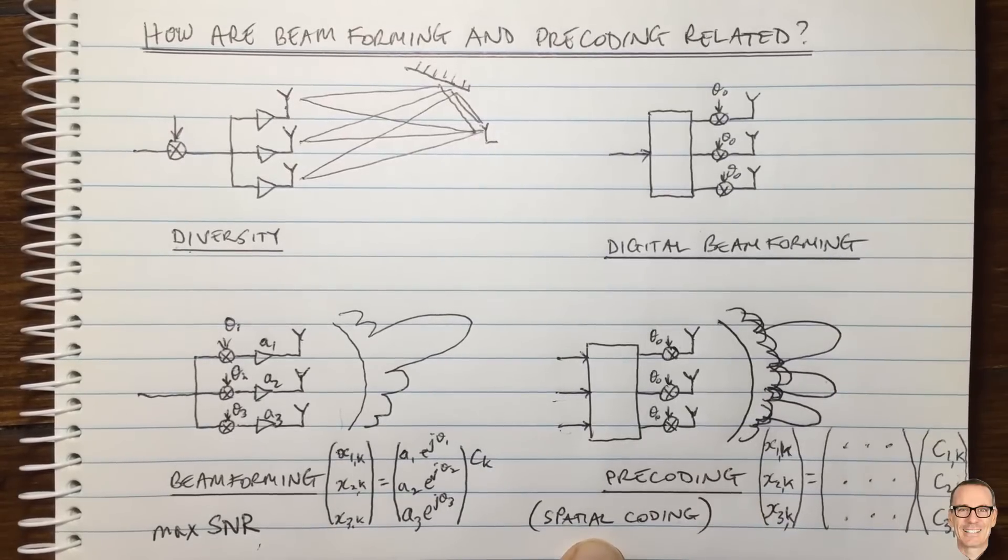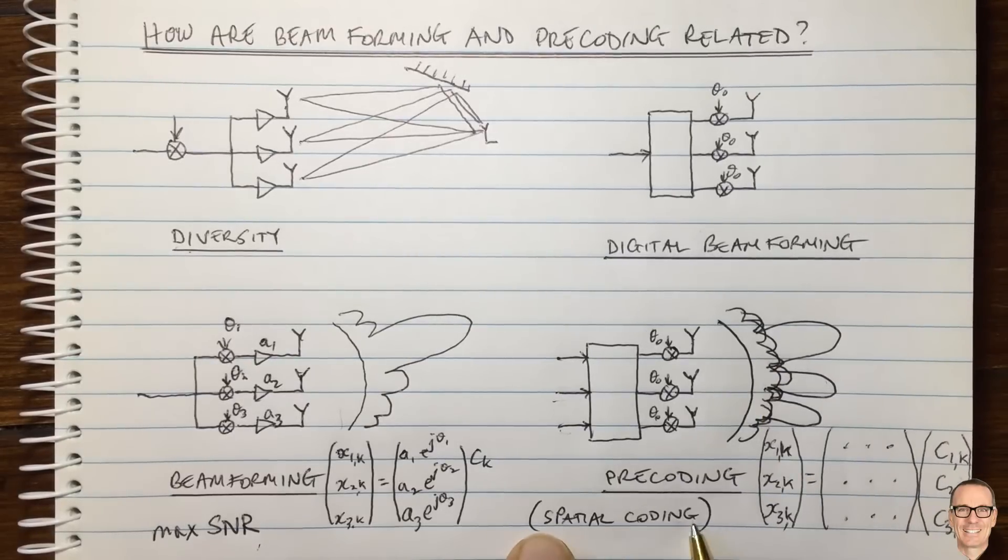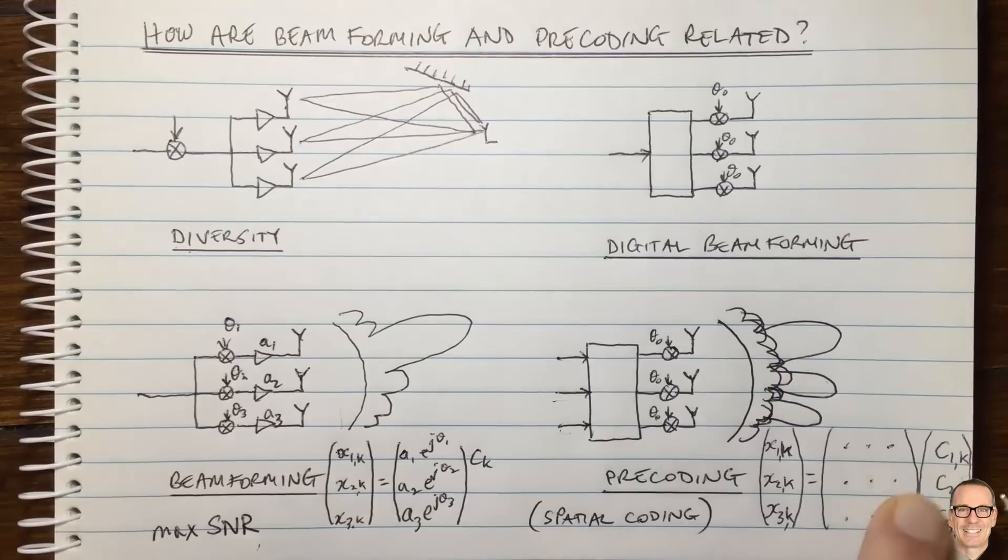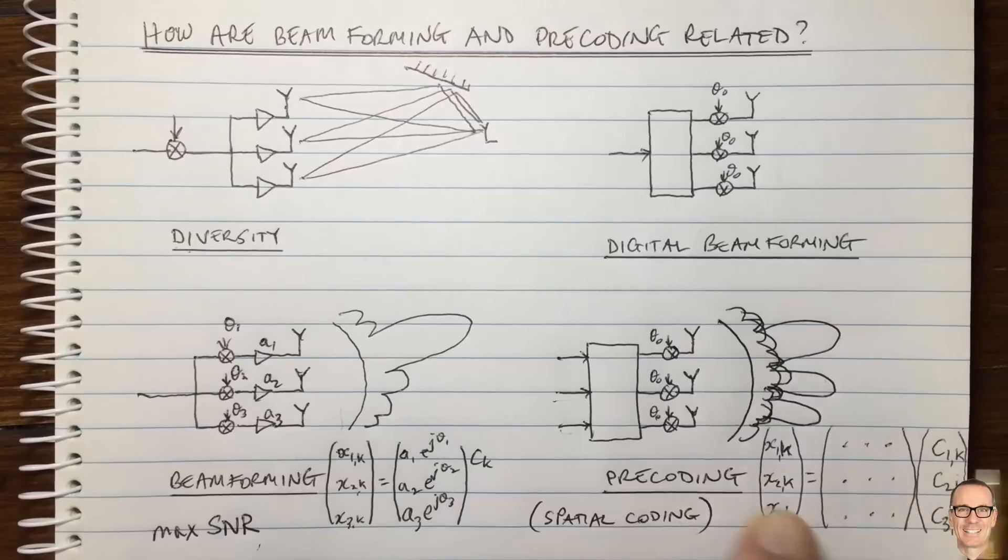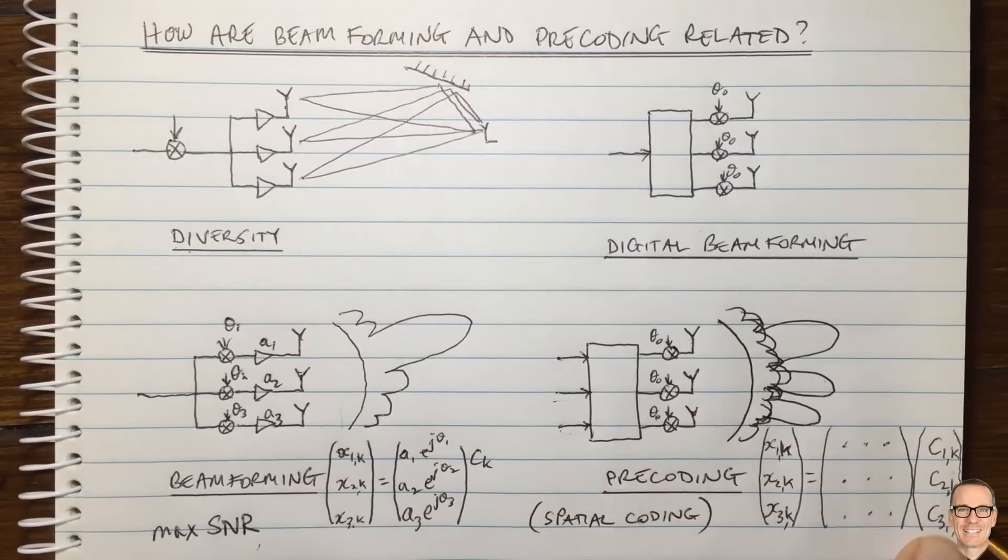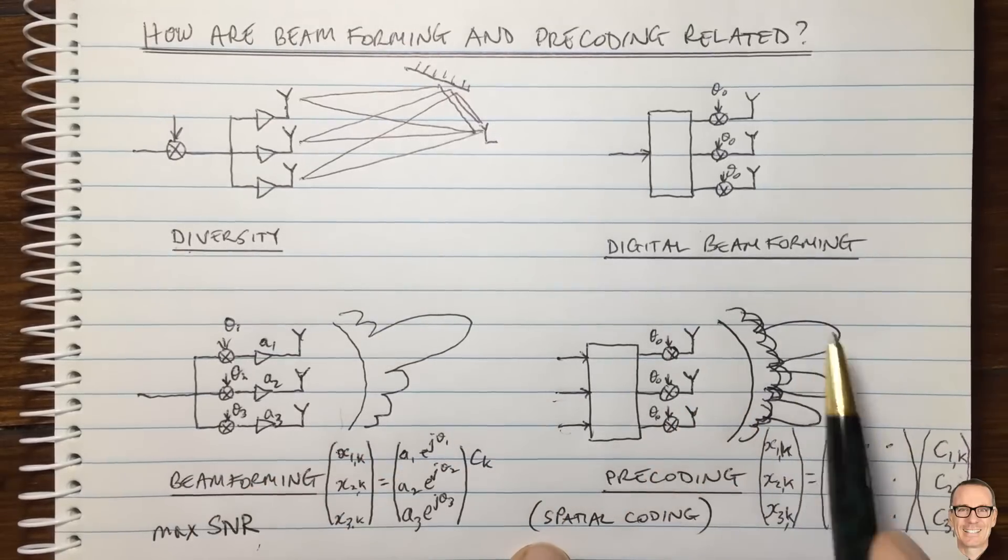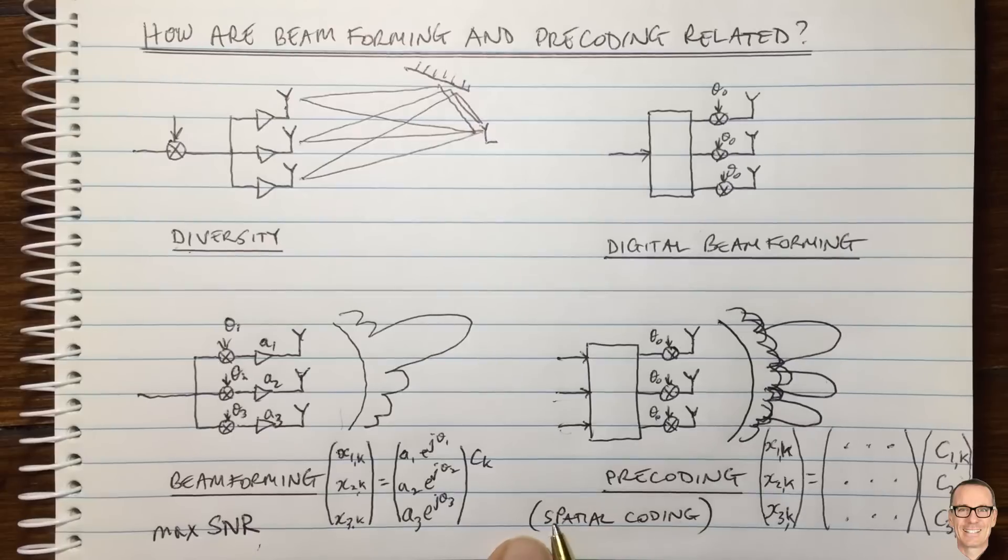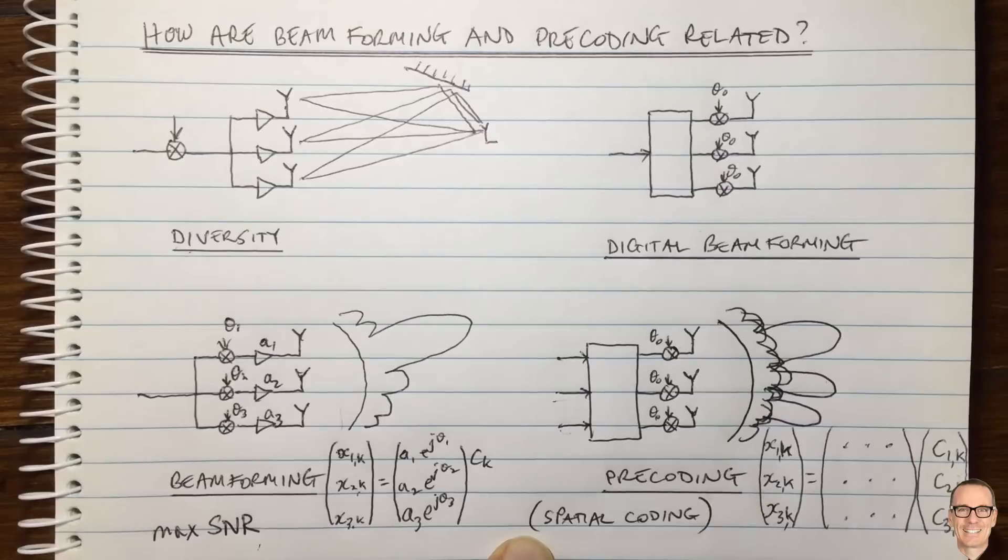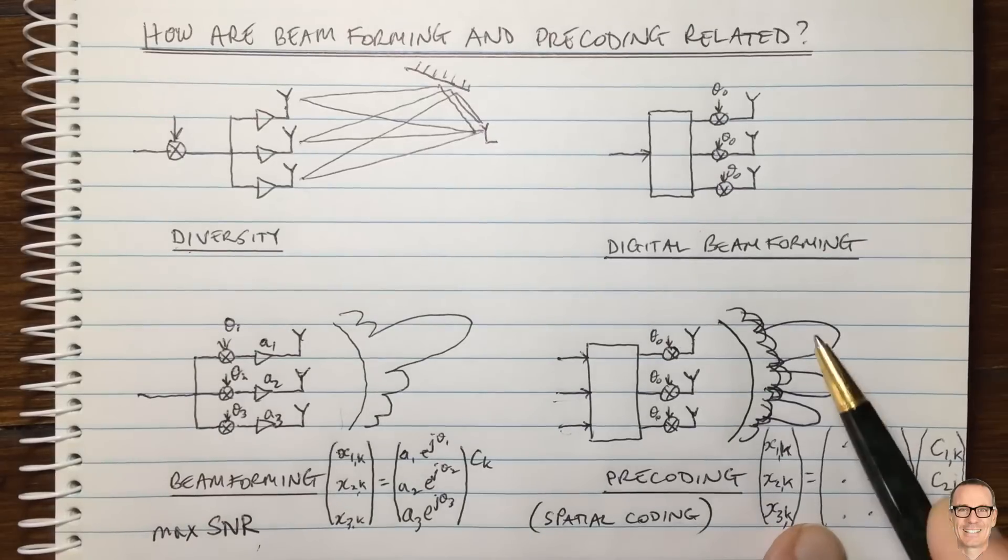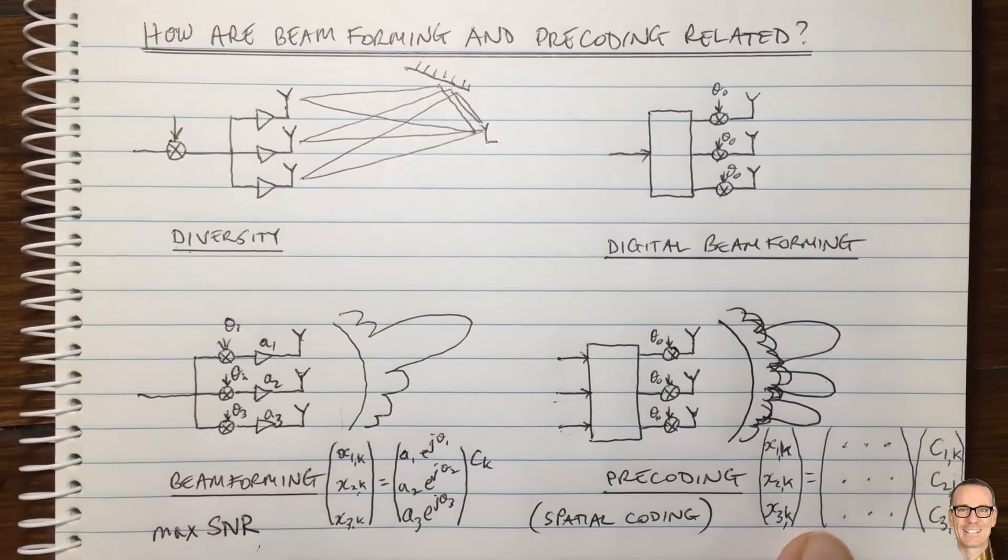You have three different beam forms for each of the input streams. And now you can think of it in terms of spatial coding, it means that you're sending stream one in one spatial direction, you're sending stream two in a second spatial direction, and you're sending stream three in a third spatial direction. And that has all the hallmarks of coding, you are doing spatial coding of the input streams. So that's why we call it precoding.